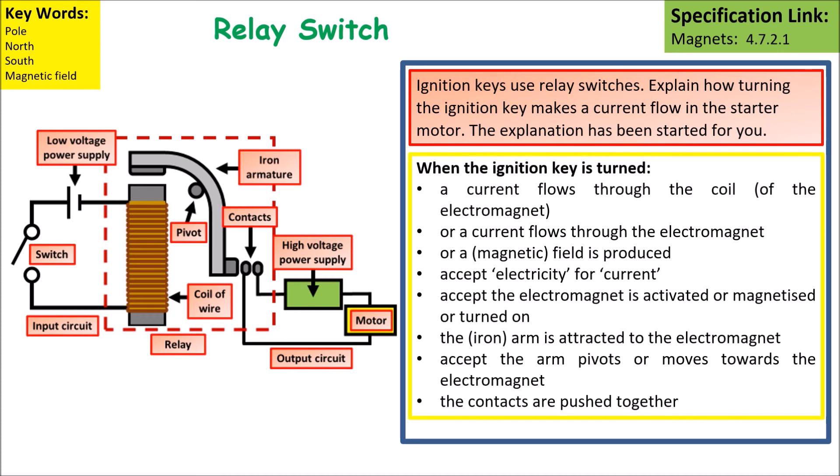When the ignition key is turned, the current flows through the coil. This causes a magnetic field around the electromagnet.